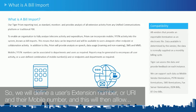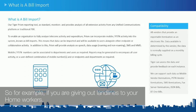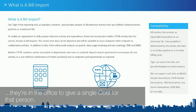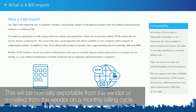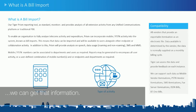We will define a user's extension number or URI and their mobile number, which will then allow you to look at all of the data that person has made. For example, if you are giving out landlines to your home workers, you may want to incorporate the home worker's landline and their extension number while they're in the office to give a single cost for that person. We will only be able to import data from vendors that allow an exportable itemization in an electronic file, normally available from the vendor on a monthly billing cycle, although it could be weekly or daily — that will be up to the vendor.